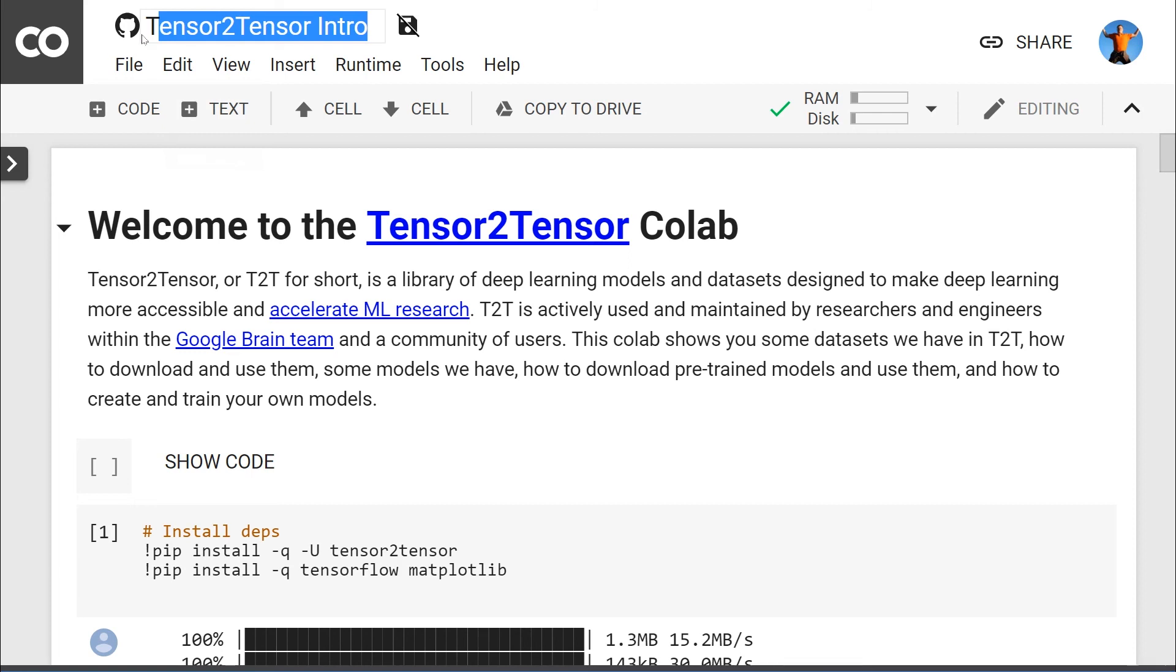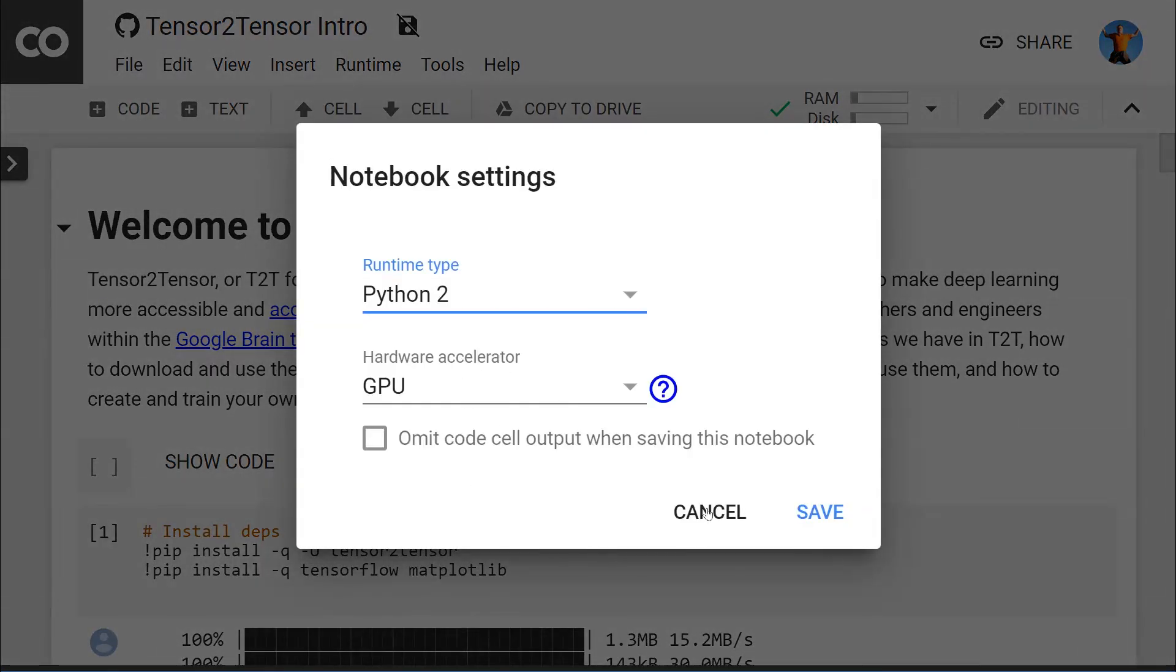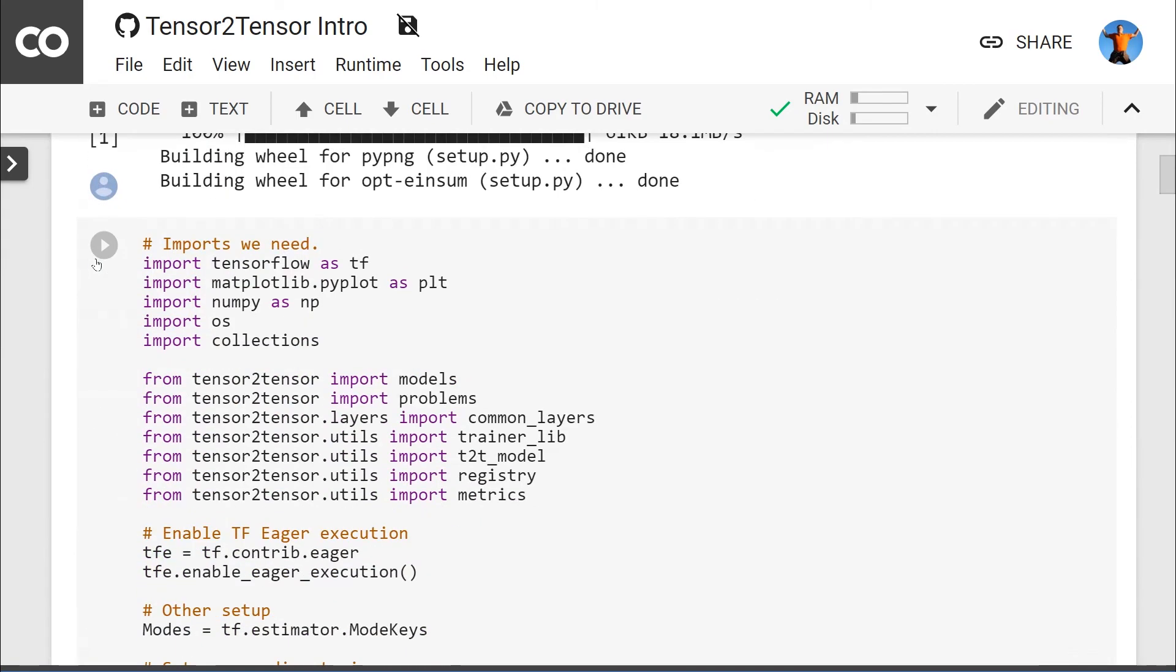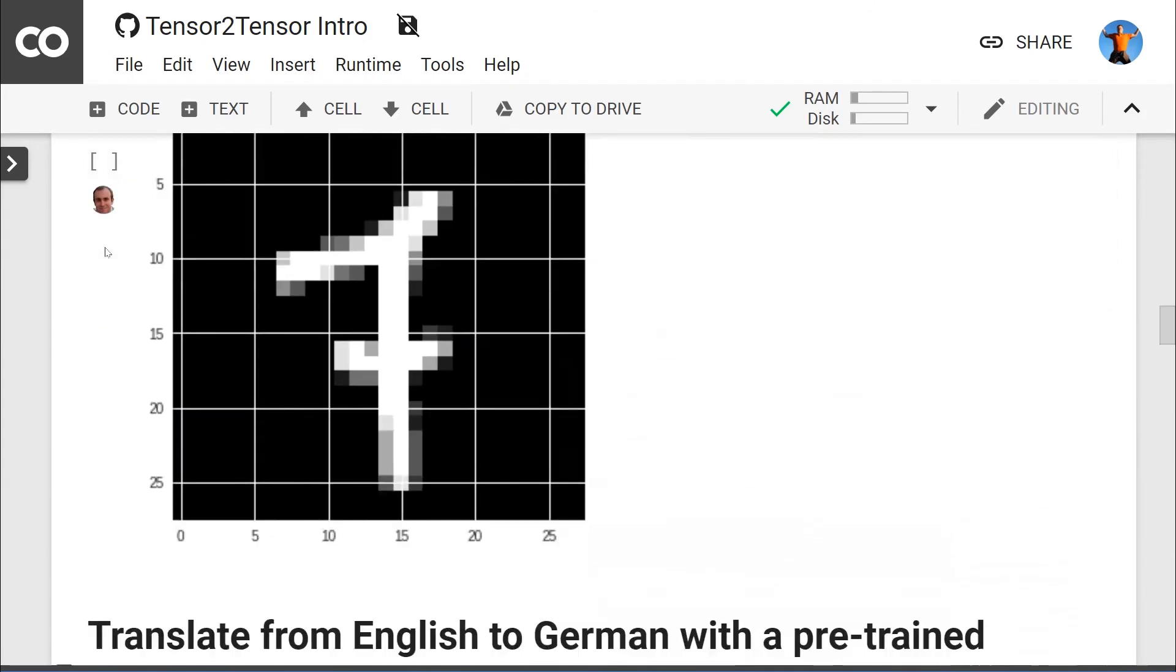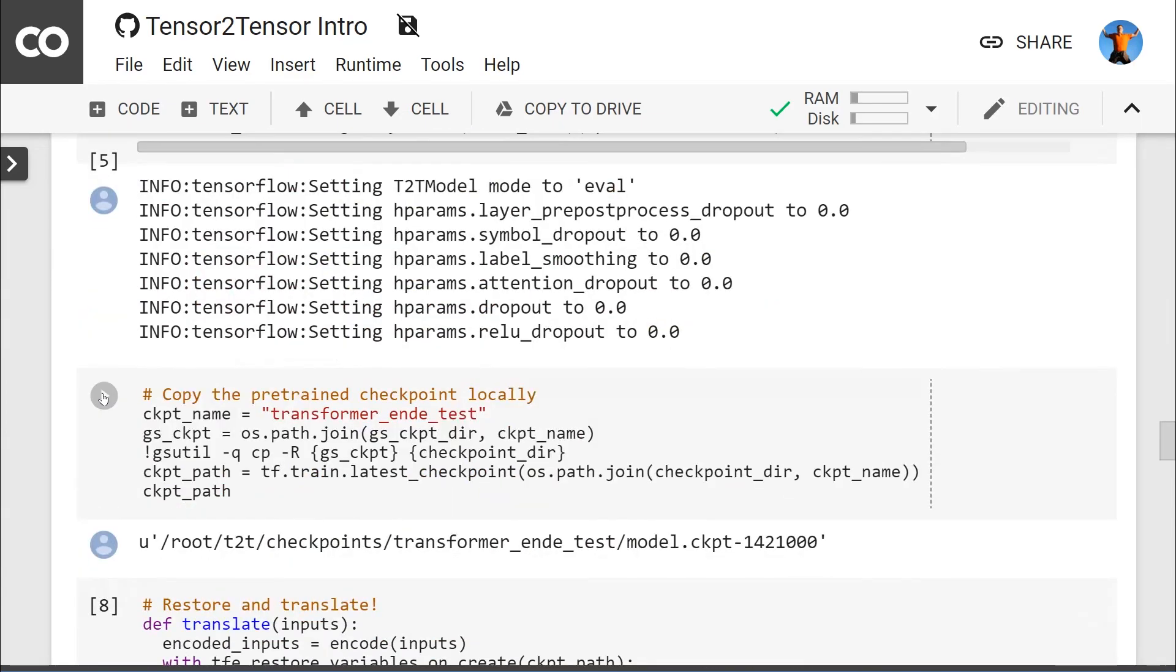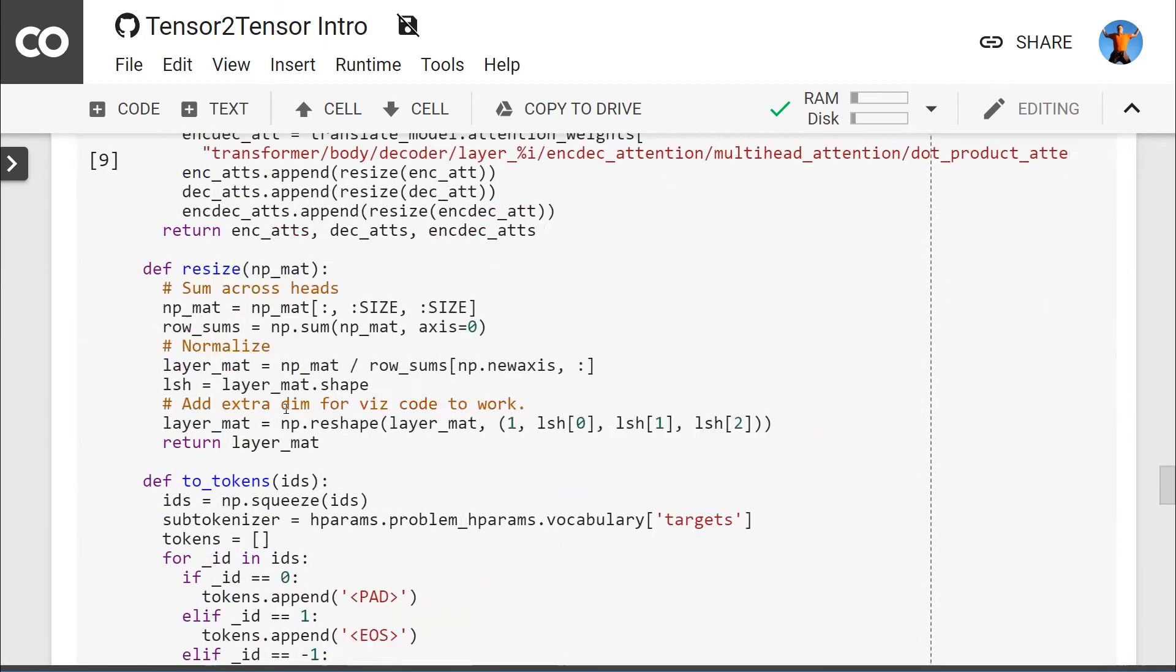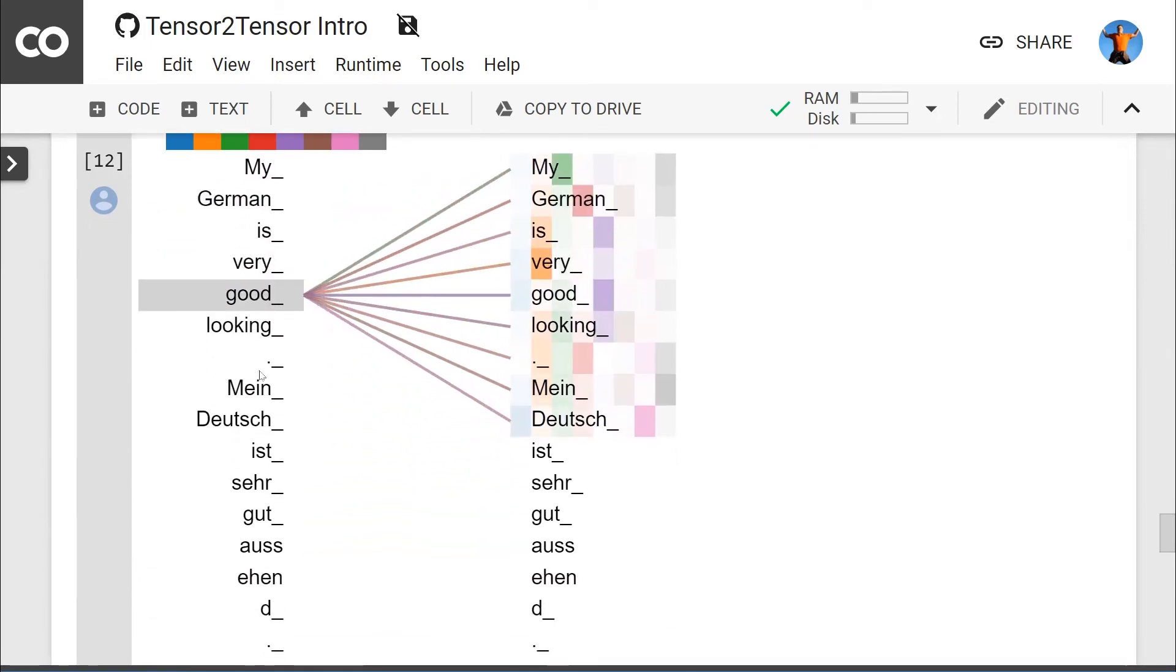It's called Tensor2TensorIntro, and I'll leave the link to this collab as well. Before you start, set the runtime type to GPU and connect to the runtime. First, install all the dependencies. Run the import section. You can skip mnist because we don't care about that. Translate from English to German with a pre-trained model is what we want. Run everything to the bottom, and you can play around with the sentence. The attention visualization is also quite fascinating. Run everything to the bottom, and you can visualize all the attention weights that the network learned to translate the phrase that you put in.